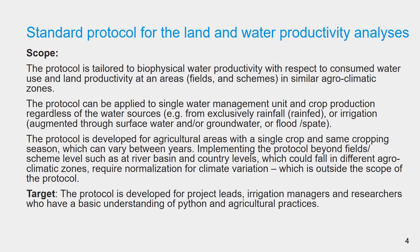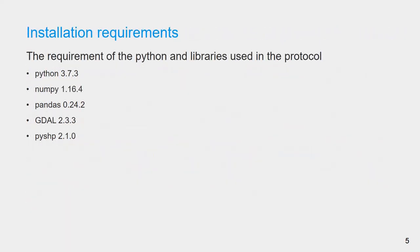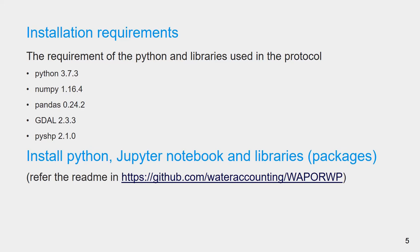The protocol targets project leads, irrigation managers, and researchers who have a basic understanding of Python, irrigation, and agricultural practices. There are minimum version requirements for Python and libraries such as Pandas, GDAL, and Pyshape required to run this protocol. Information related to installation procedures for Python, Jupyter Notebooks, and libraries can be referred to from the readme file in the GitHub repository.